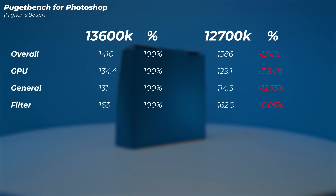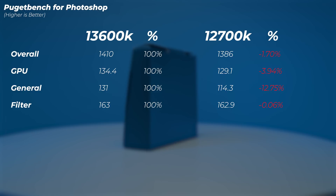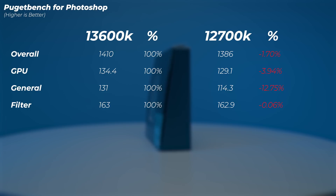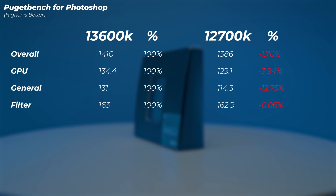In Photoshop, the 12700K is 1.7% slower in the overall score. Interestingly, the GPU score is about 4% slower on the 12700K even though we're using the exact same GPU — the CPU difference affects the GPU score as well. The general score is 12.75% slower on the 12700K, which is absolutely fascinating. These benchmarks are not done just once — about seven runs were done on both and averaged for accurate data.